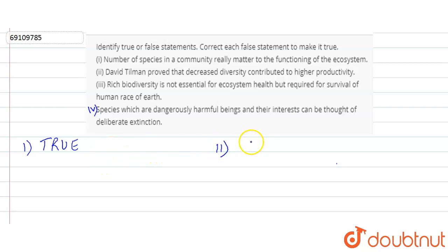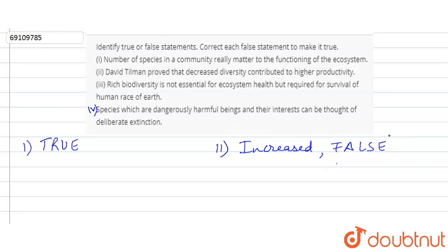Second, the statement claims that David Tillman proved that decreased diversity contributed to higher productivity. This is false. When David Tillman experimented on plots, he proved that increased diversity contributes to higher productivity — decreased diversity will never give you higher productivity. As we increase diversity with plants, productivity will be higher, we will provide more food to organisms, our organisms will flourish more, and stability will increase.